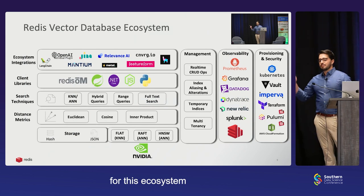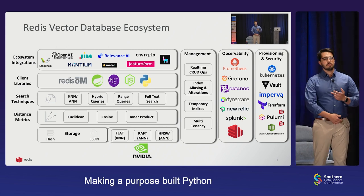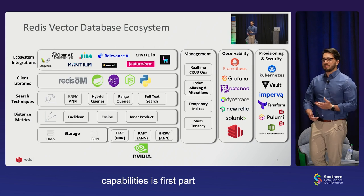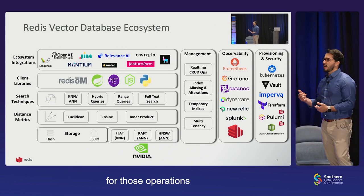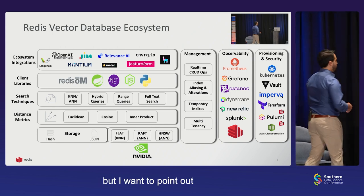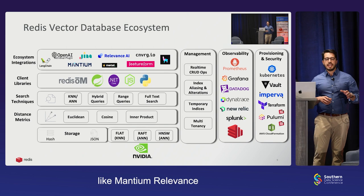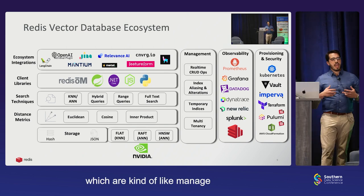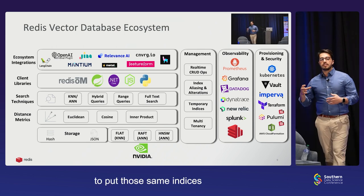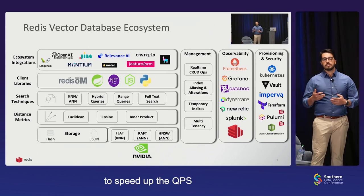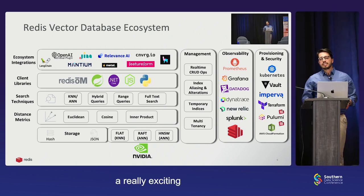My team is responsible for this ecosystem. Over the past year we've been integrating into LangChain, making a purpose-built Python client called Redis VL, integrating vector capabilities as first-class citizens in the 50-some languages that Redis supports, and making purpose-built data structures for those operations. We're working on LangChain, LlamaIndex, and partners like Mantium, Relevance, Feature Form, and Metal. We're also working with NVIDIA so you can put those same indices on a GPU to speed up QPS performance with their state-of-the-art indexes — they just released a paper on Kaggle.